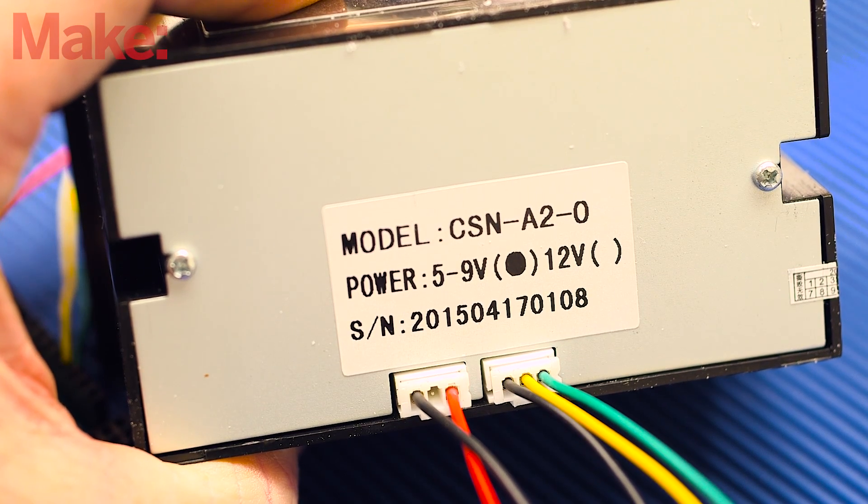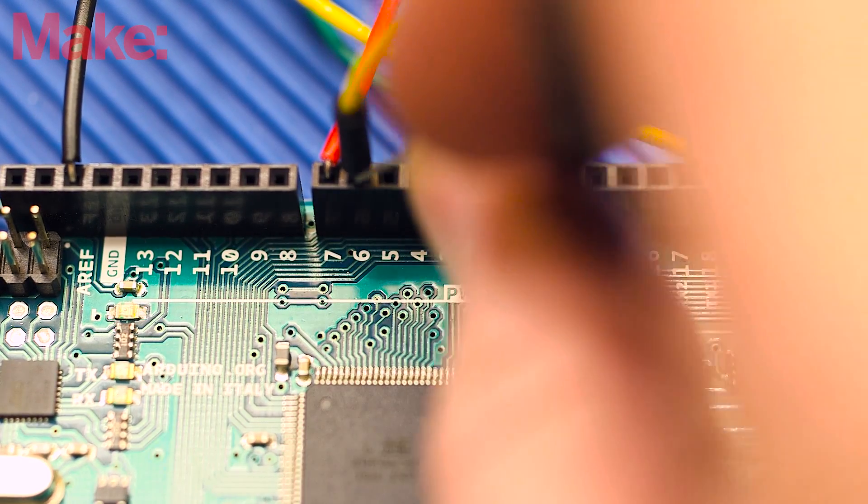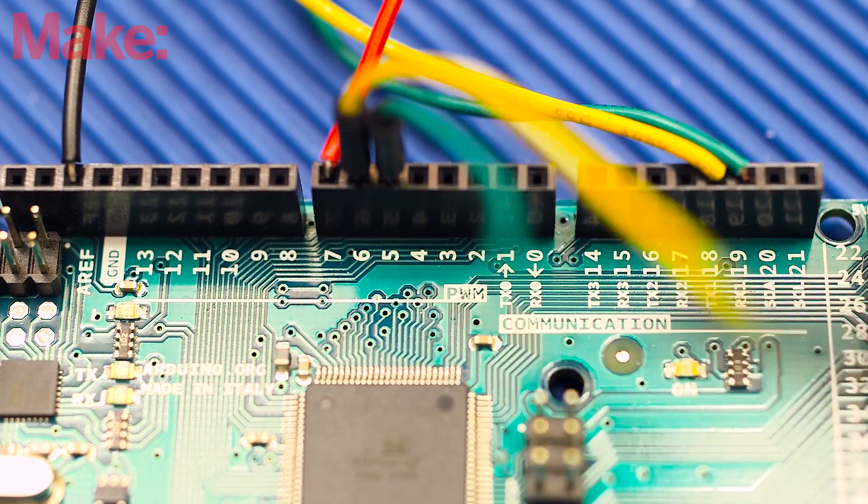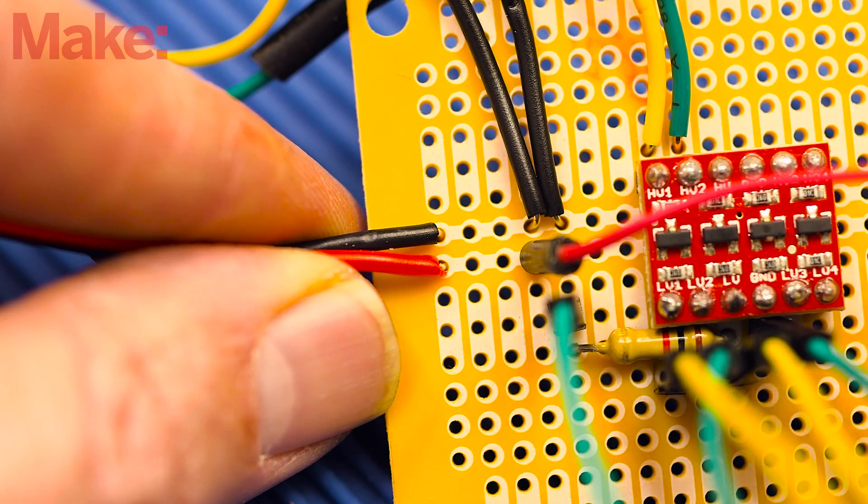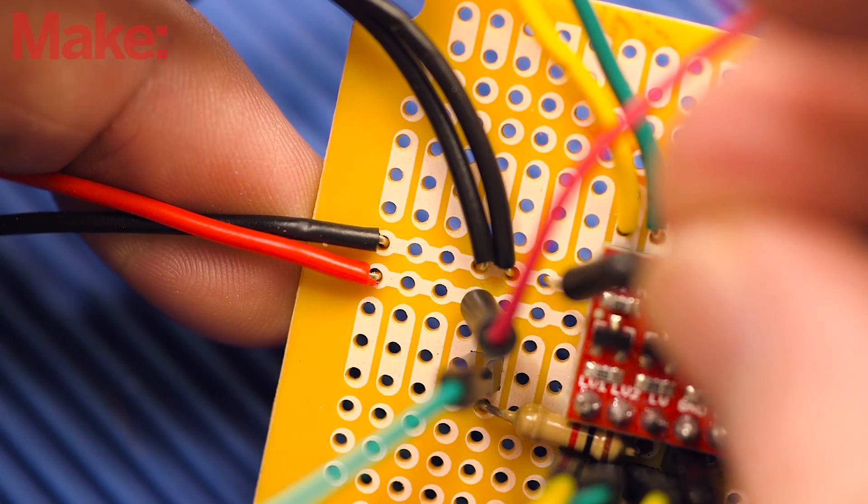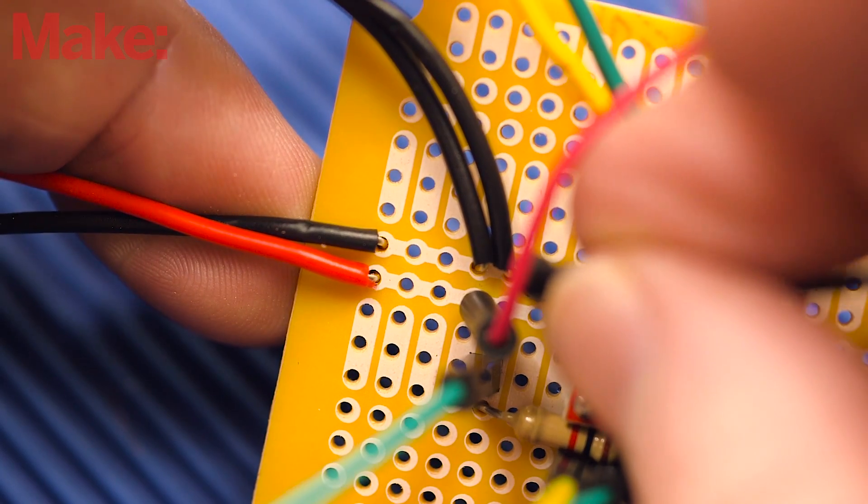To wire the thermal printer's serial connection, run its yellow cable to D6 on the Arduino and green to D5. Power the printer by running its red and black wires to the 9-volt power and ground rails on the perf board. Use a wire splice to extend these wires if you need more slack.